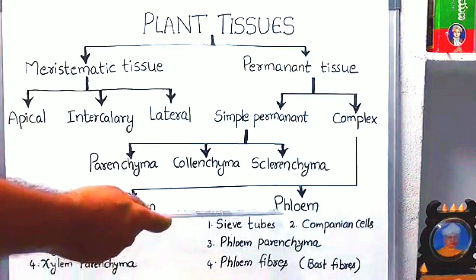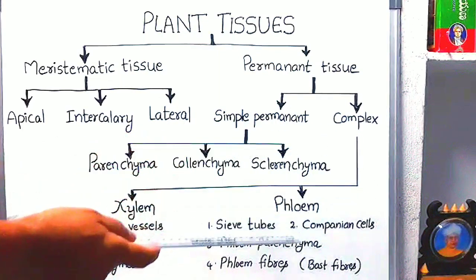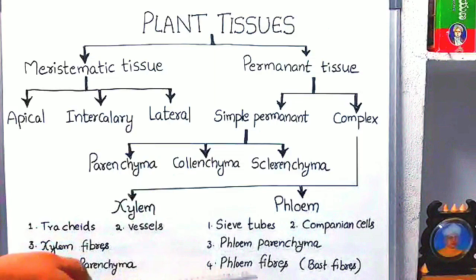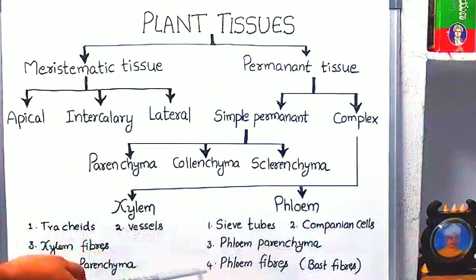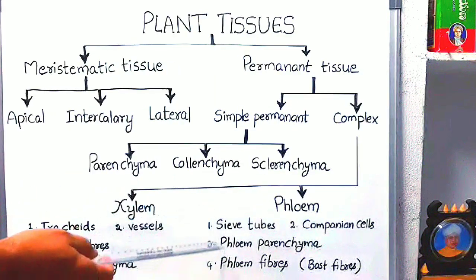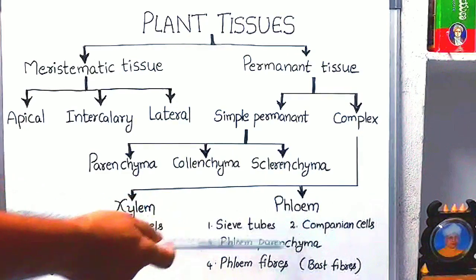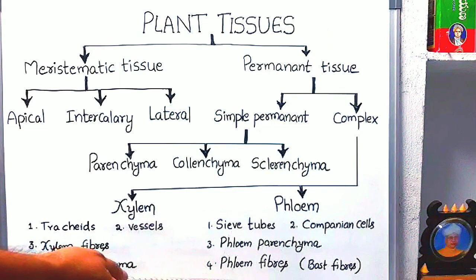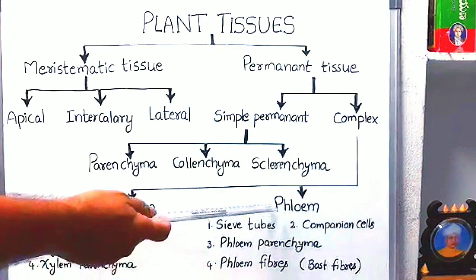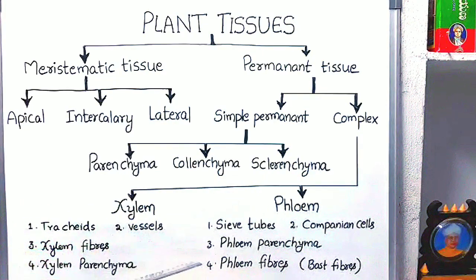Phloem is the second type of complex permanent tissue and it also consists of four types of elements: sieve tubes, companion cells, phloem parenchyma, and phloem fibers. The function of phloem is the conduction of food materials.